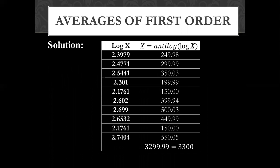The total of the x column is approximately 3300. And we will count the total number of x values: 1, 2, 3, 4, 5, 6, 7, 8, 9, and 10.